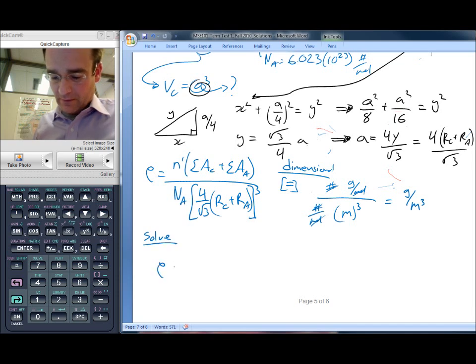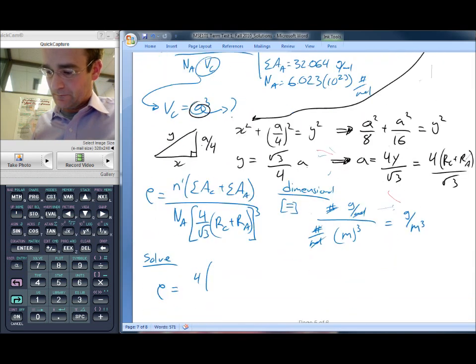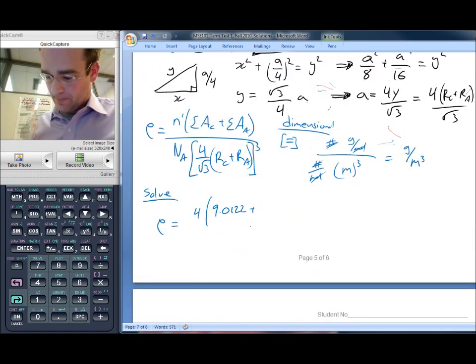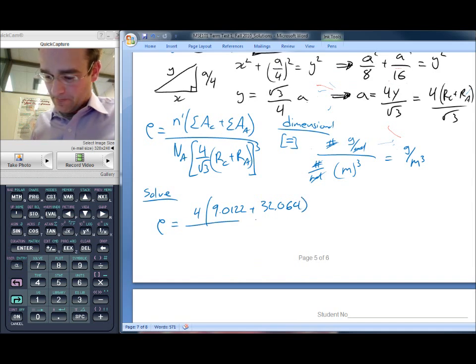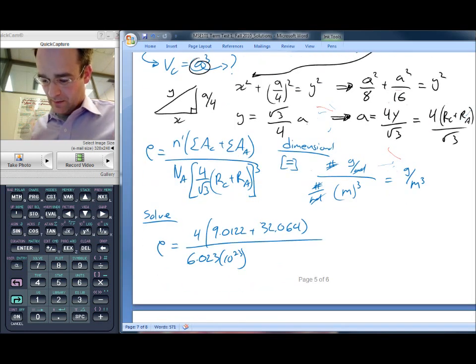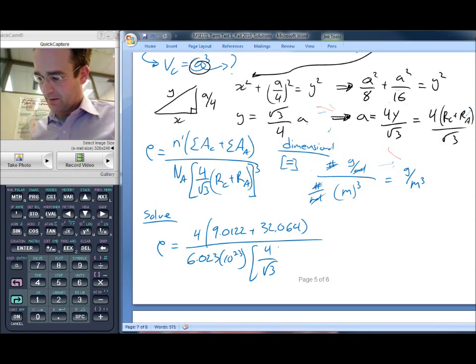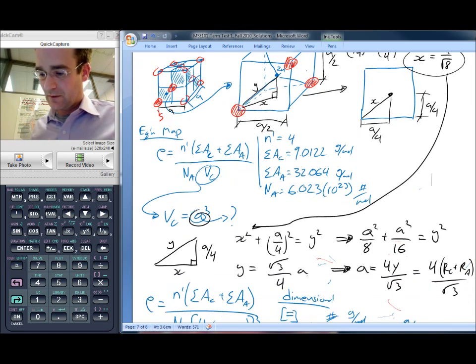And then we can solve this, and that will be density is going to be equal to 4 times 9.0122 plus 32.064 divided by 6.023 times 10 to the 23rd. While I'm doing this, let me see if you can go ahead and calculate it as well. 4 over root 3 and the radius of the anion and the radius of the cation. I actually didn't specifically draw it, but they're given right here. So there's the cation radius and there's the anion radius.